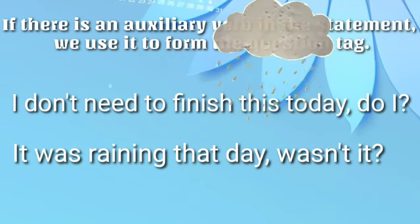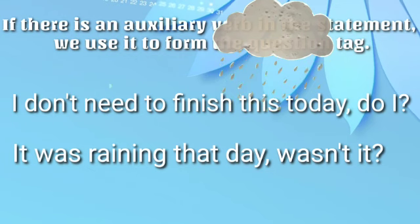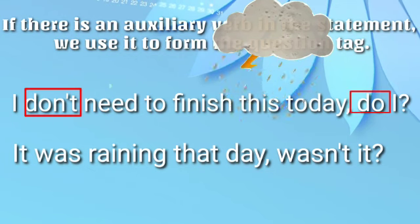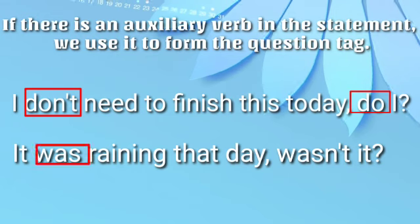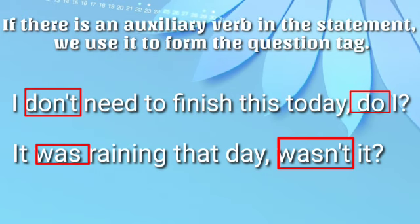Pada contoh kalimat yang pertama, statement-nya negatif, auxiliary verb-nya 'don't', maka question tag-nya 'do'. Untuk kalimat yang kedua, auxiliary verb-nya 'was' positif, maka question tag-nya negatif: 'wasn't'.